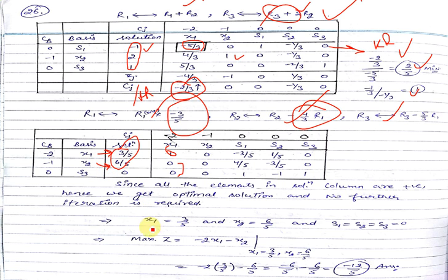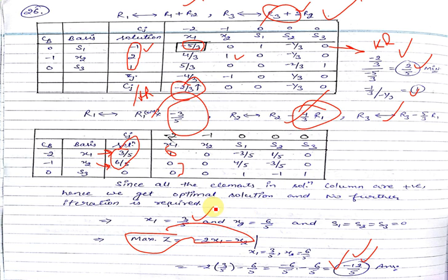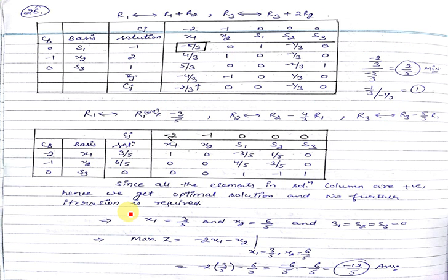The values in the solution are now positive — there is no negative value — so we have our final solution: x1 equal to 3/5 and x2 equal to 6/5. Substituting into the objective function gives maximum Z equal to minus 12/5. That's all for the linear programming lecture. If you have any doubts, please put them in the comment section. Please like and share this video, and don't forget to subscribe to my channel. Thank you for watching.